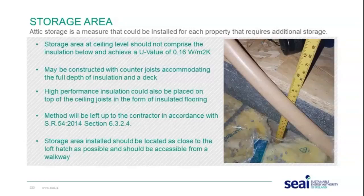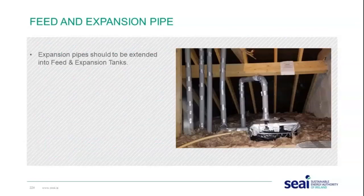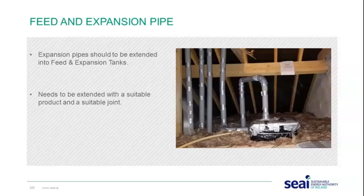The storage area should be installed as close to the loft hatch as possible and accessible from a walkway. For feed and expansion pipes, these should be extended into the feed and expansion tanks. Situations arise where contractors have not properly extended the pipe into the tank, or have used pipe insulation to extend it rather than the pipe itself, or cut a square out of the tank — these approaches are not acceptable as there is no guarantee that boiling water would enter the tank without spilling out.